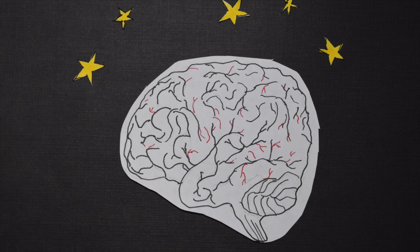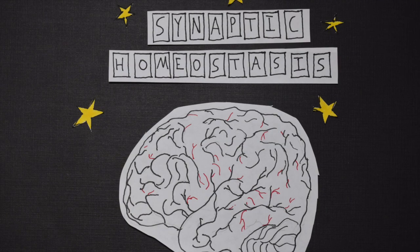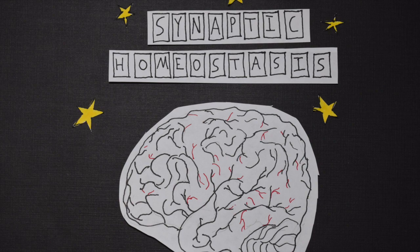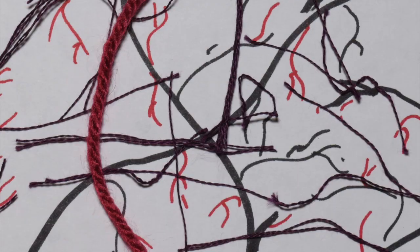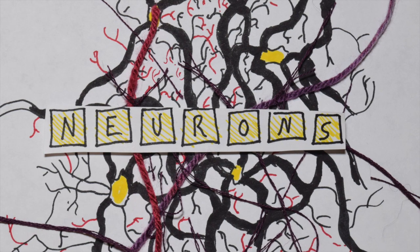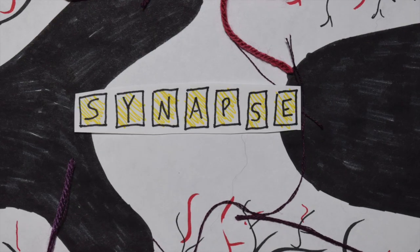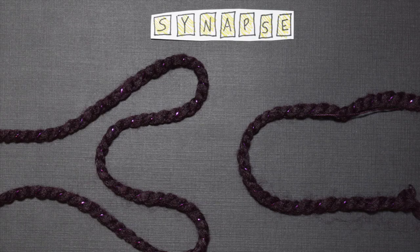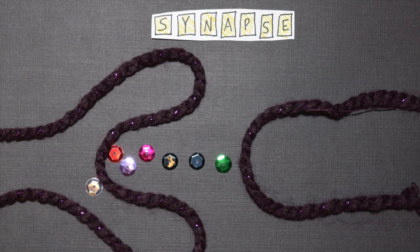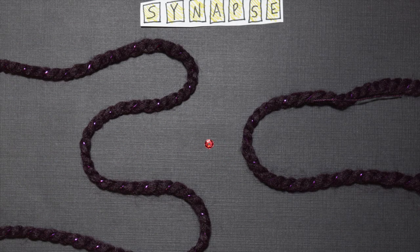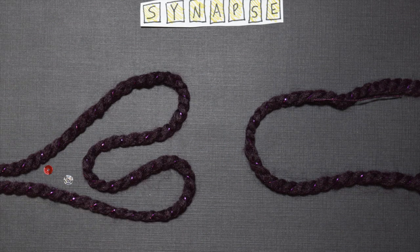One possibility is the synaptic homeostasis hypothesis. Inside your head are billions of spindly cells called neurons. Between these neurons are quadrillions of tiny gaps called synapses. These synaptic connections can be strengthened or weakened, increasing or decreasing the flow of information between two connected neurons.